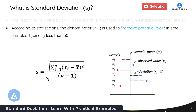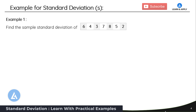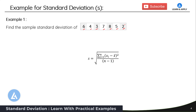Now let's go into detail to understand how to calculate the standard deviation. Example one: find the sample standard deviation of a sample consisting of data points 6, 4, 3, 7, 8, 5, and 2. The formula is S equals the square root of the summation from i=1 to n of (xi minus x-bar) squared, divided by n minus 1. I will also explain how to calculate using Microsoft Excel and a scientific calculator, but first let's understand what this formula means.